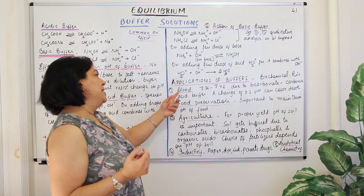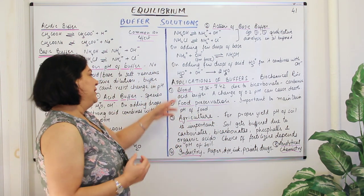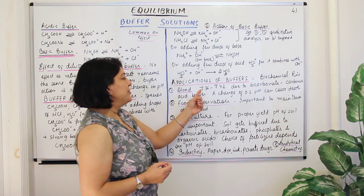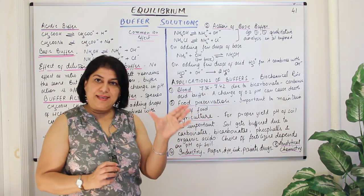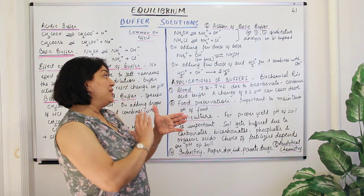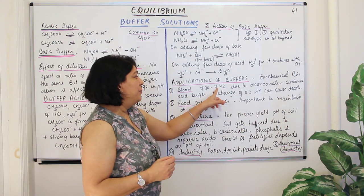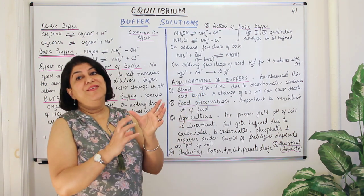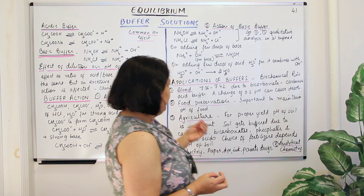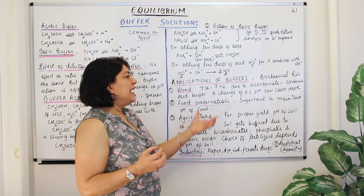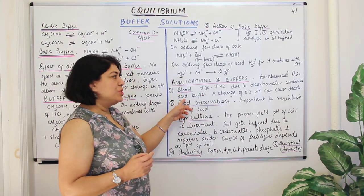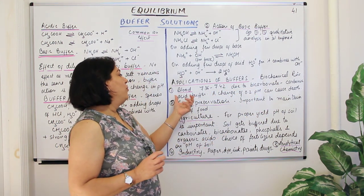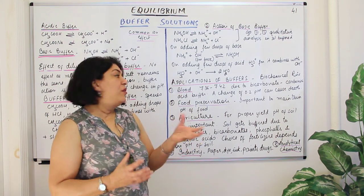Blood acts as a natural buffer with a pH range of 7.36 to 7.42. If the pH shifts above to 7.44 or below to 7.34, even that small change is enough to kill a person. This buffering action of blood is due to carbonic acid — a weak acid — and bicarbonate, which together provide the buffer action.